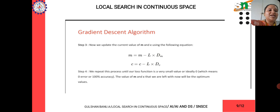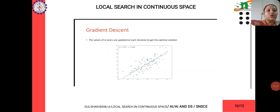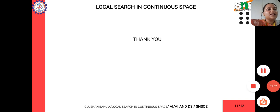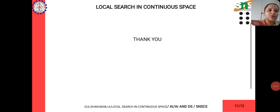Step 4 is to repeat this process until the loss function is very small or ideally 0. When calculated in a formulating manner, we will be getting the equation in an effective manner. This is all about local search and optimization. In the next video, I will meet you with a different topic. If you have any doubts, please comment in the comment section. Thank you so much.